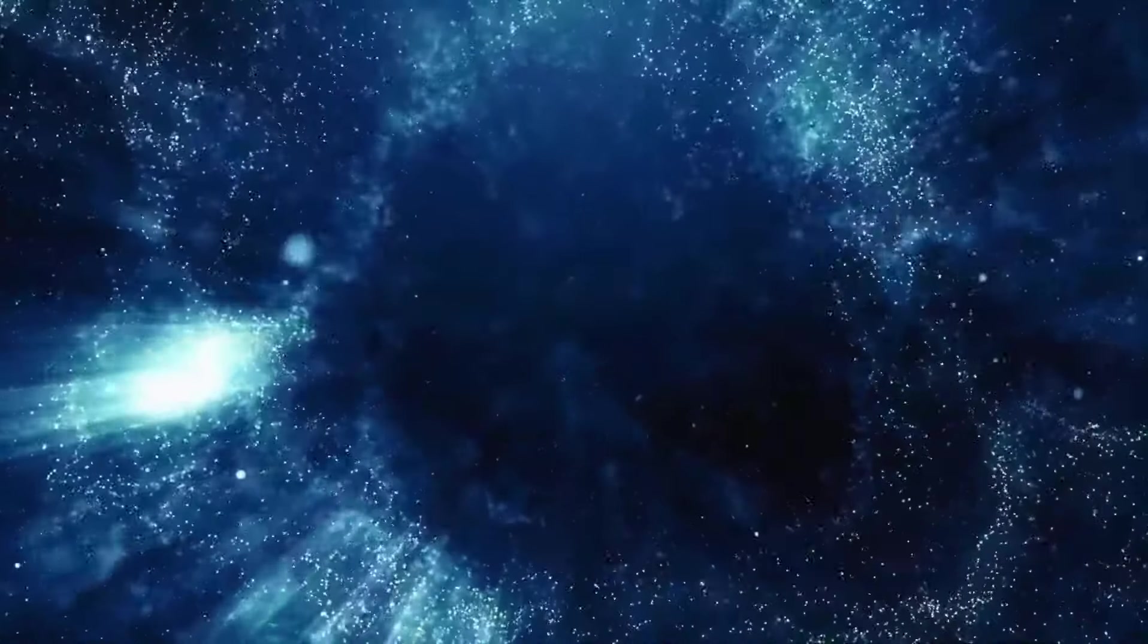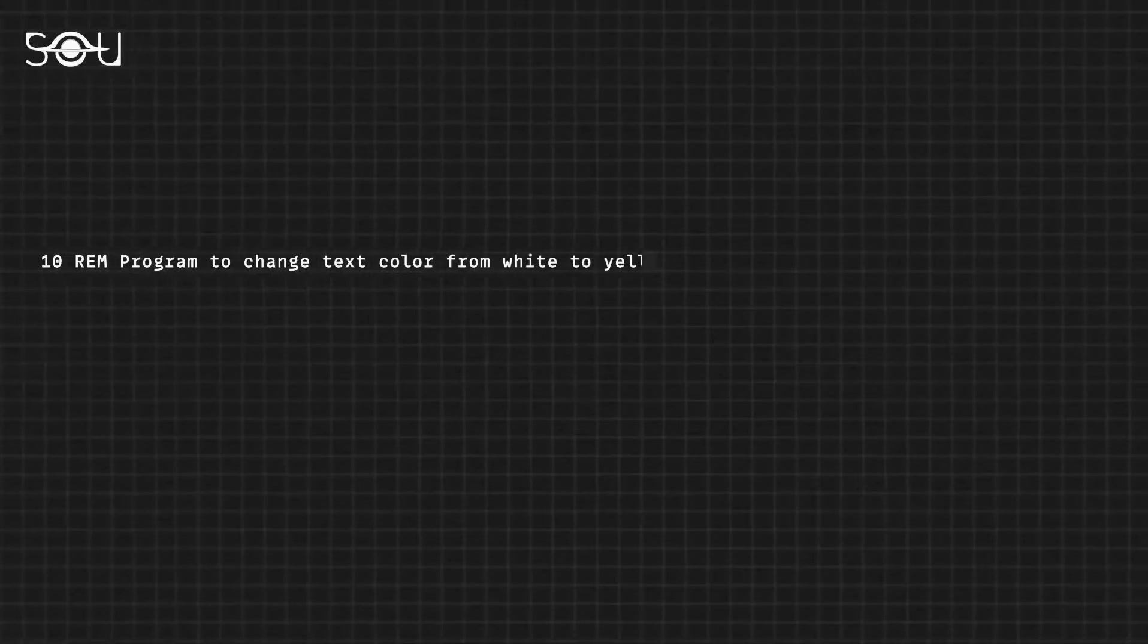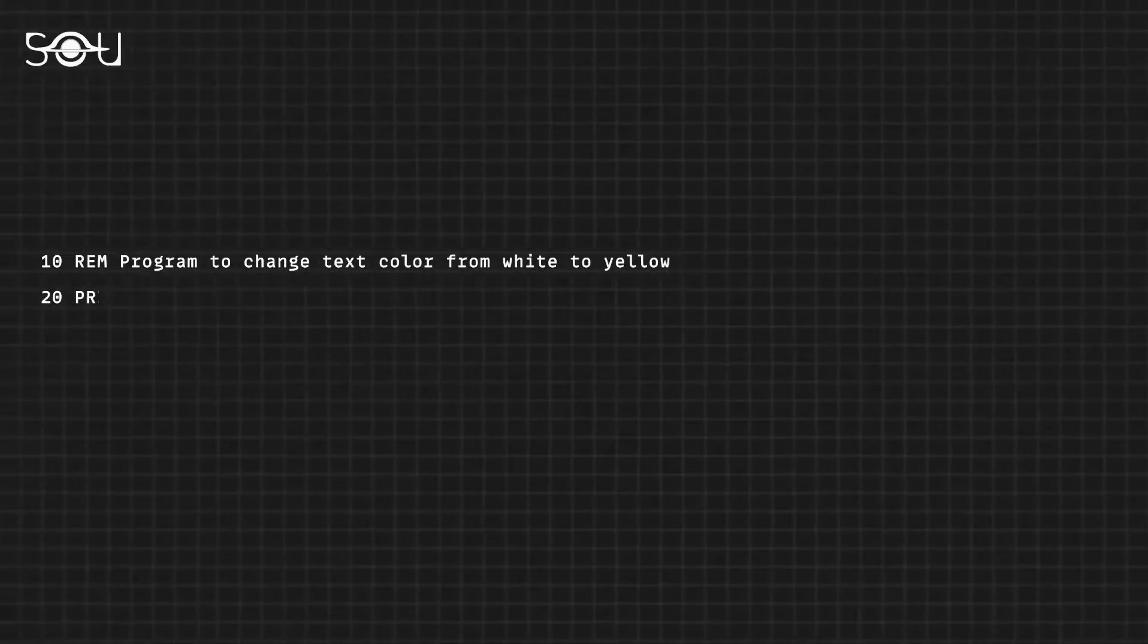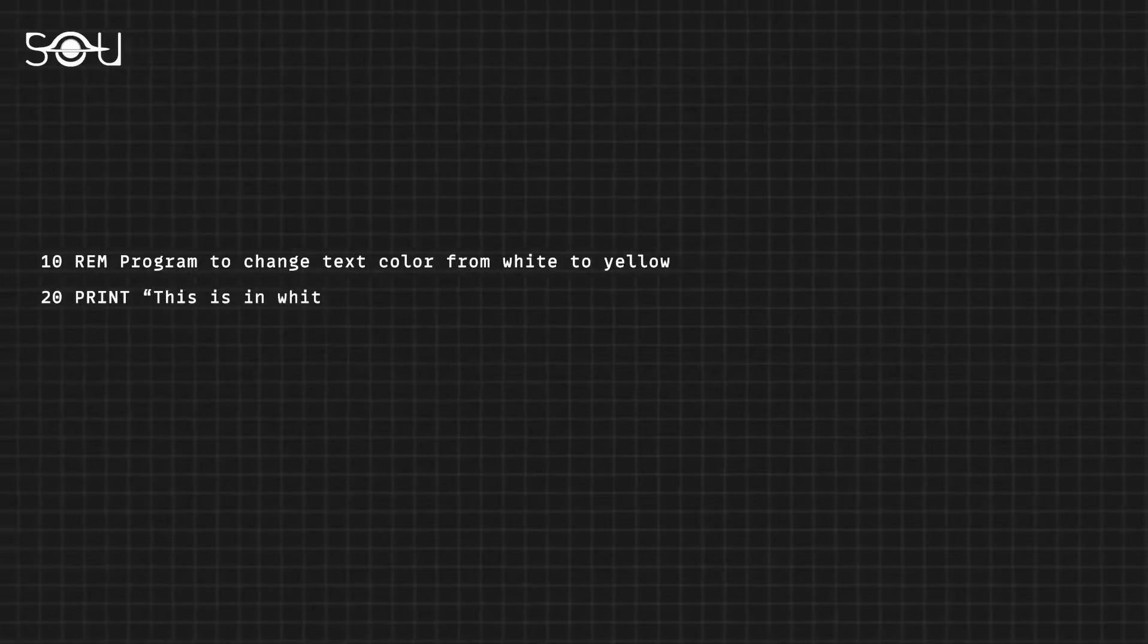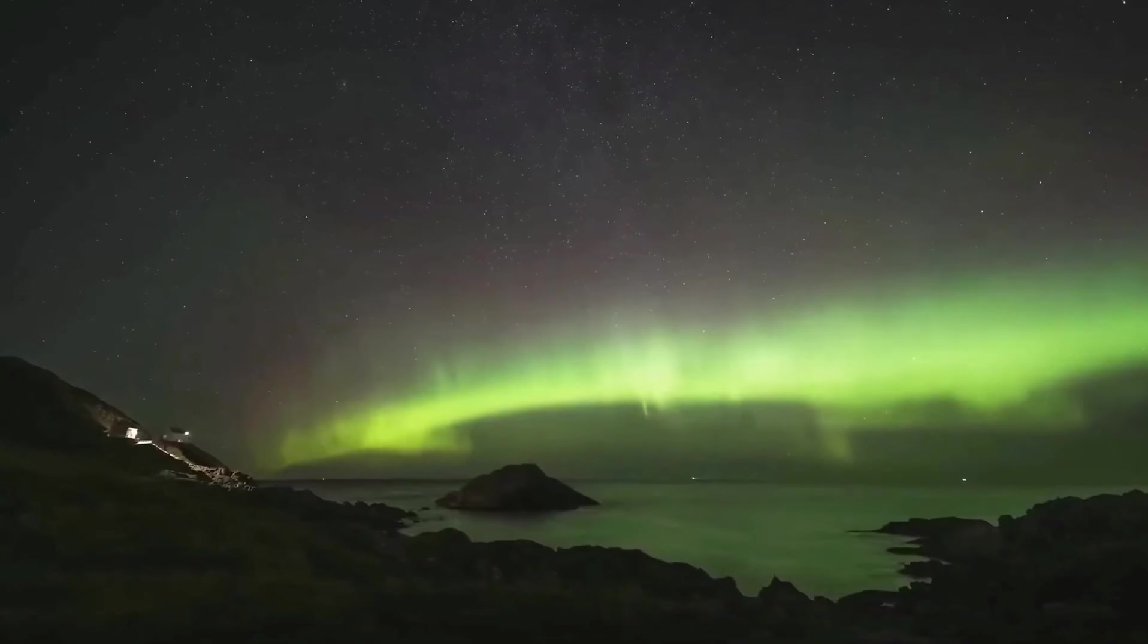Both Voyagers are now so far from Earth that a one-way radio signal traveling at the speed of light takes almost 22 hours to reach Voyager 1 and just over 18 to catch up with Voyager 2. They advance by 3 to 4 light seconds every day.